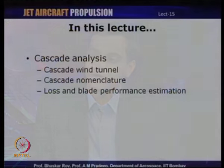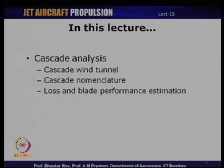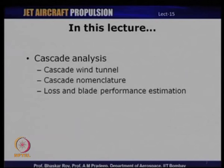In today's lecture, what we are going to discuss is a slightly different topic. It is still related to compressors, but on a simpler level, because what we are going to discuss initially is something to do with a stationary row of blades like a stator. We are going to basically talk about what is meant by a cascade. We will begin with cascade analysis, look at what a cascade wind tunnel is, and then understand the nomenclature associated with a cascade — the many angles, velocity components, and other geometric parameters involved.